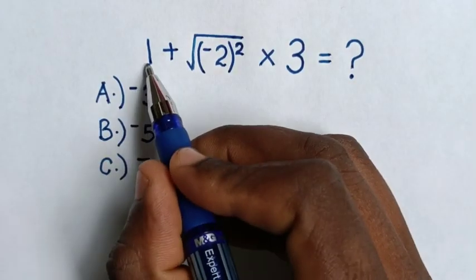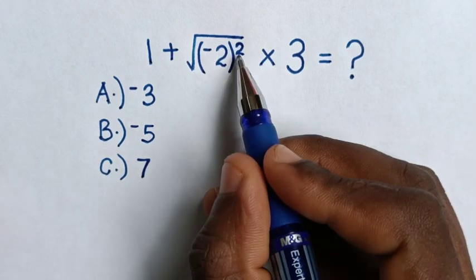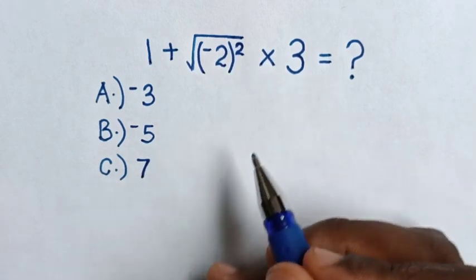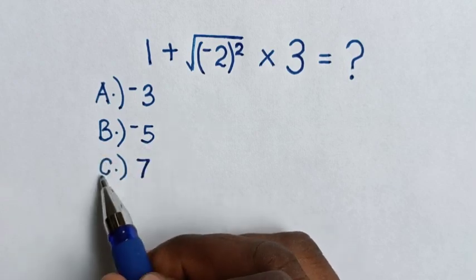Hello! How to solve 1 plus square root of negative 2 bracket square times 3 by selecting the answers in A, negative 3, B, negative 5, C, 7.